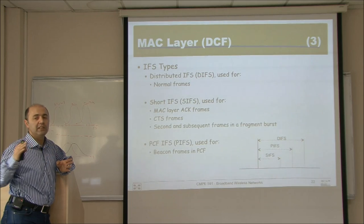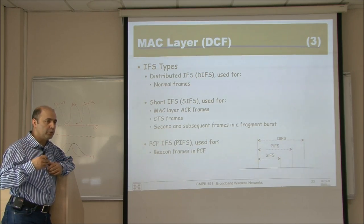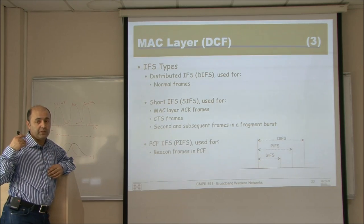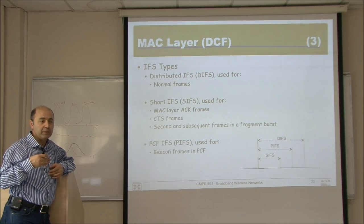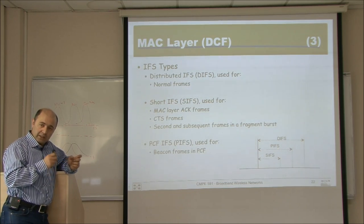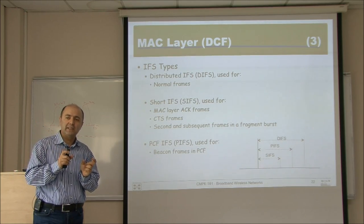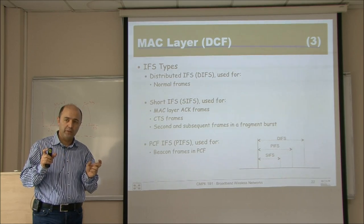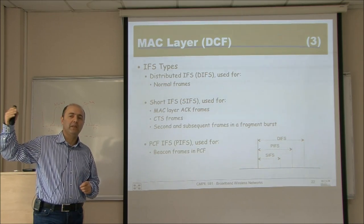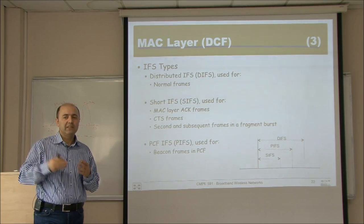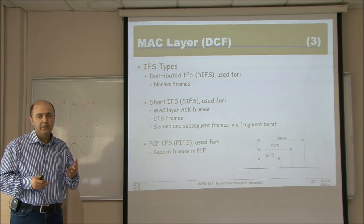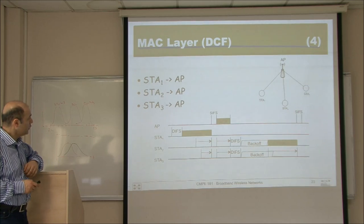DIFS is for regular data frames — when you have no subsequent frames to transmit, others get their chance. SIFS is for acknowledgements and fragment bursts so those get in first. This means if you have subsequent fragments to send, you get priority over other nodes wanting to start a new data frame.